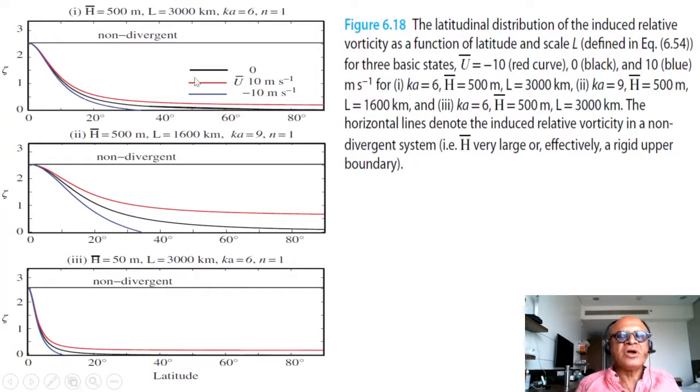Again, similar messages: westerly flow expands the influence or the equatorial trapping all the way out to the poles. But we remember that for a westerly flow, you can have h go negative, but here we have fixed h. h_s can go negative, but we have fixed the total depth here.